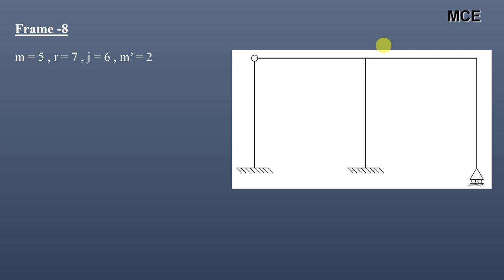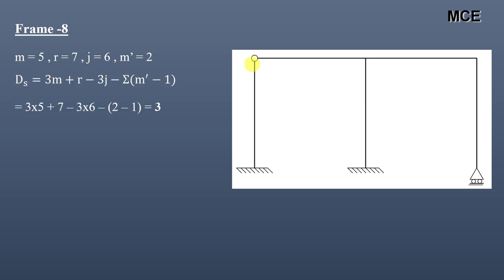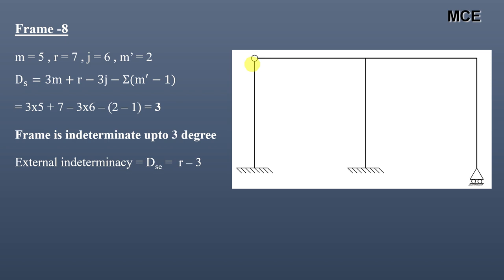For Frame 8, we can see it has a total of 5 members, 7 reactions, 6 joints, and 1 internal hinge. The number of members meeting at this internal hinge is 2, so m′ = 2. The value of ds = 3, so this frame is indeterminate to 3 degrees. External indeterminacy = r − 3 = 7 − 3 = 4. Internal indeterminacy = 3 − 4 = −1.